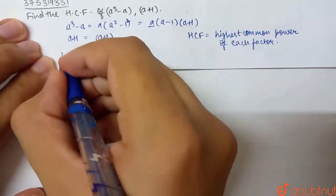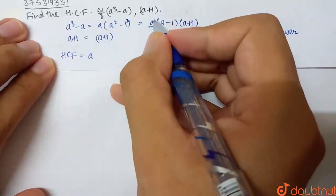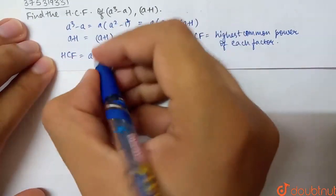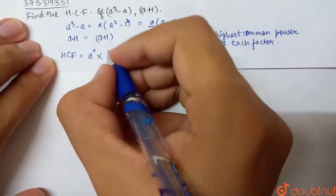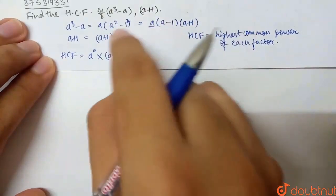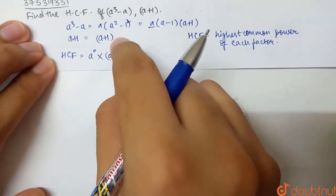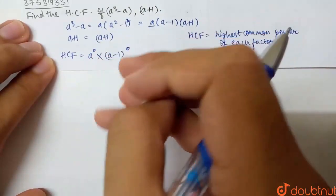HCF is the common highest power of each factor, which is 1 and here is 0. So, common is basically (a+1)⁰. Then, (a-1) has the highest power of 0, because what do we have here? Here is (a-1), but here (a-1) is not present. So, (a-1) is to the power of 0. We assume that anything to the power of 0 is basically 1.